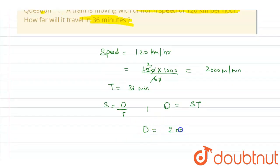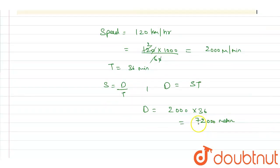Distance equals 2000 into 36, which is equal to 72,000 meters. We can divide it by 1000, so it will be 72,000 upon 1000 kilometers, which equals 72 kilometers.